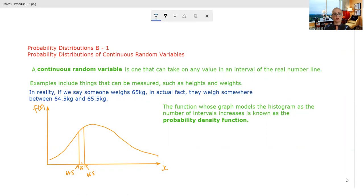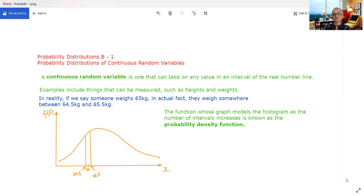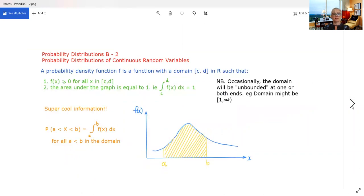So if we have a function like this and we're modelling what would happen to the histogram as you're getting smaller and smaller intervals, so it smooths out, that's called a probability density function. Let's go on and have a bit of a look about some of the features of a probability density function.